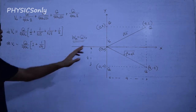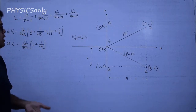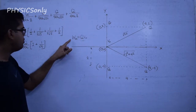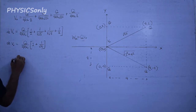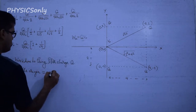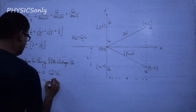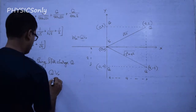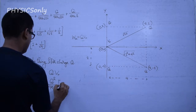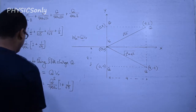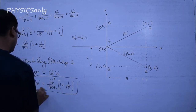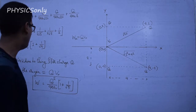Our work done to bring the fifth charge Q from infinity to the origin is W = Q × V₀. So W = Q × Q/(4πε₀) × (1 + 1/√5), which gives W = Q²/(4πε₀) × (1 + 1/√5). This is our final answer for the work done to bring the charge Q from infinity to the origin.